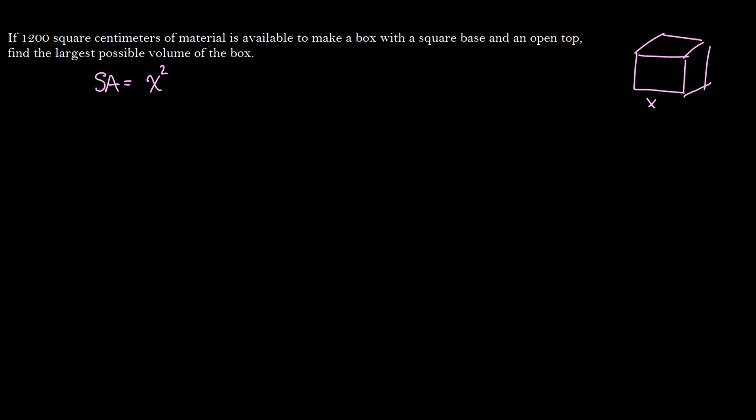The base will be x times x and we'll have some height h. So our surface area will be x squared plus we have four sides with base x times height and our volume is going to be x cubed. Sorry, not x cubed. x squared times h. Since the box does not have to be a cube, it can have different dimensions on its height from space.